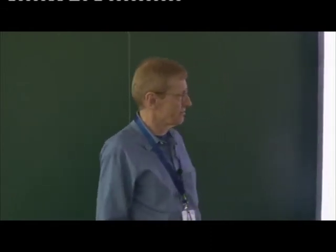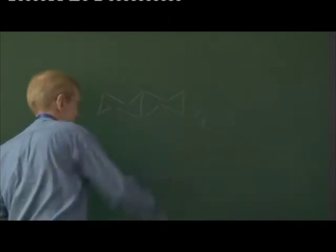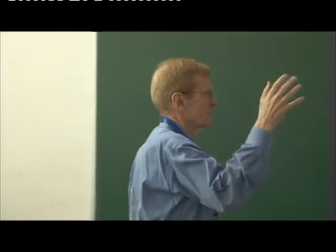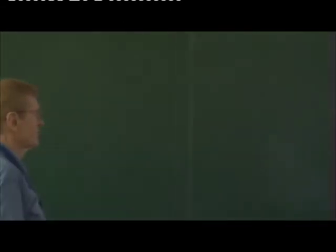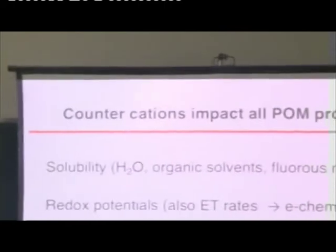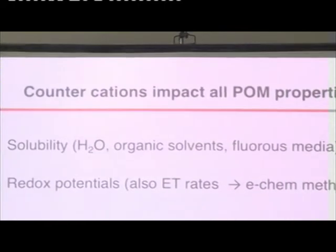So let's start out with solubility. POMs are salts, not unlike sodium chloride. But there are big differences between sodium-plus/chloride-minus and, for example, sodium₃[PW₁₂O₄₀]³⁻. You can control solubility by what the cations are. POMs, as you know, are usually made in water using sodium, potassium, sometimes lithium, sometimes ammonium salts as precursors. You do the self-assembly at a certain pH in water.